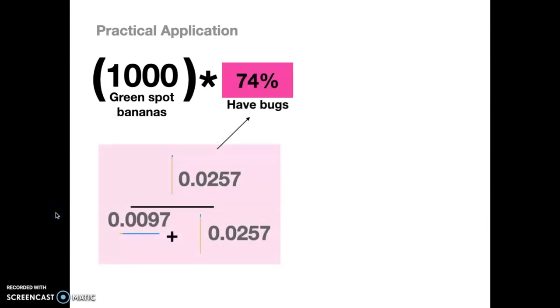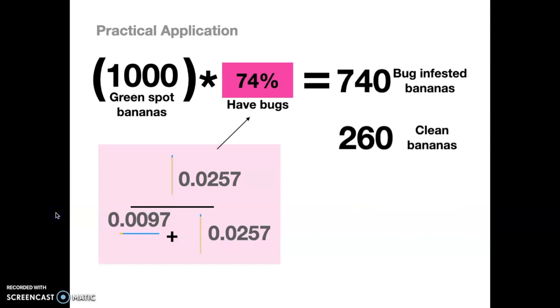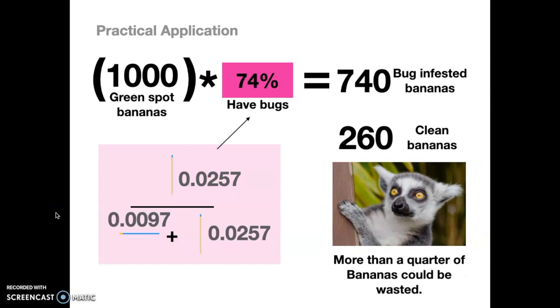Wait a minute. What was that? Can you go through that again? All right, sure. You've got a thousand green spot bananas times 74% have bugs based on that ratio we had calculated earlier. And that equals 740 bug-infested bananas, which means 260 clean bananas. That's far different than what we would have expected if we used just that clue. If we would have just said 99 out of 100 bananas are going to be bad, we would have thrown out the whole crate pretty much. You're never going to find that one good banana. But in this case, more than a quarter of the bananas could have been wasted. That's a lot of bananas for lemurs that could have been wasted.